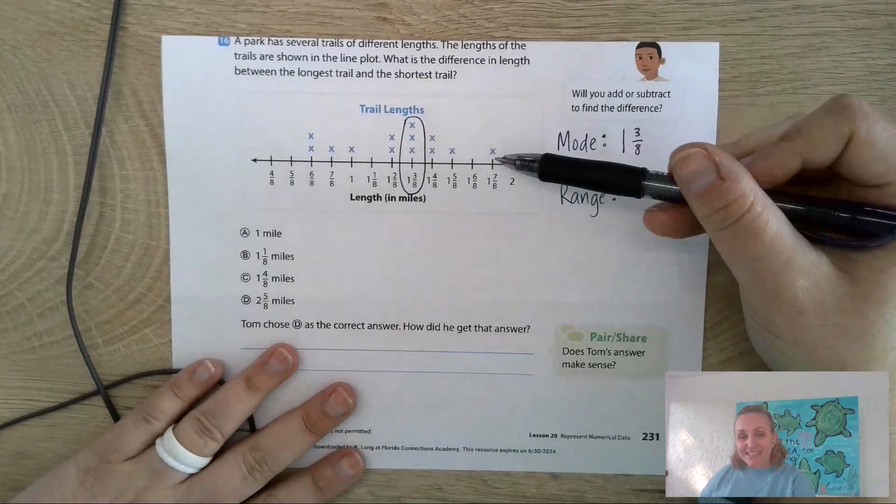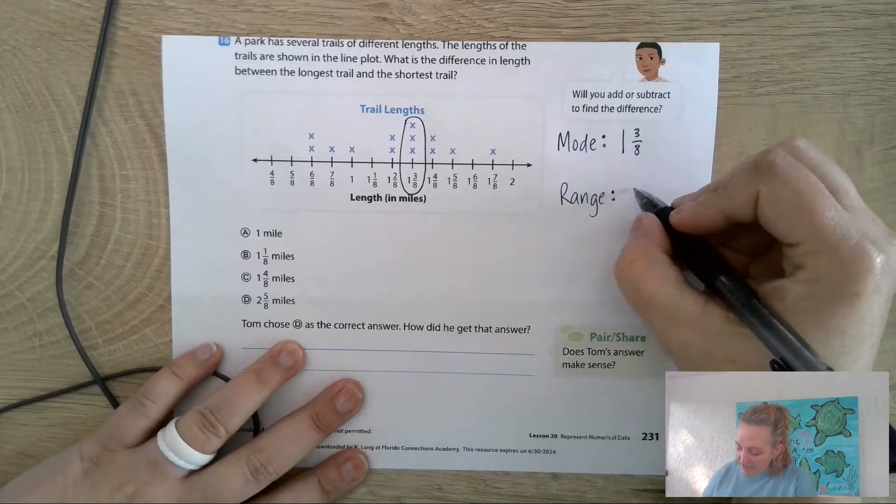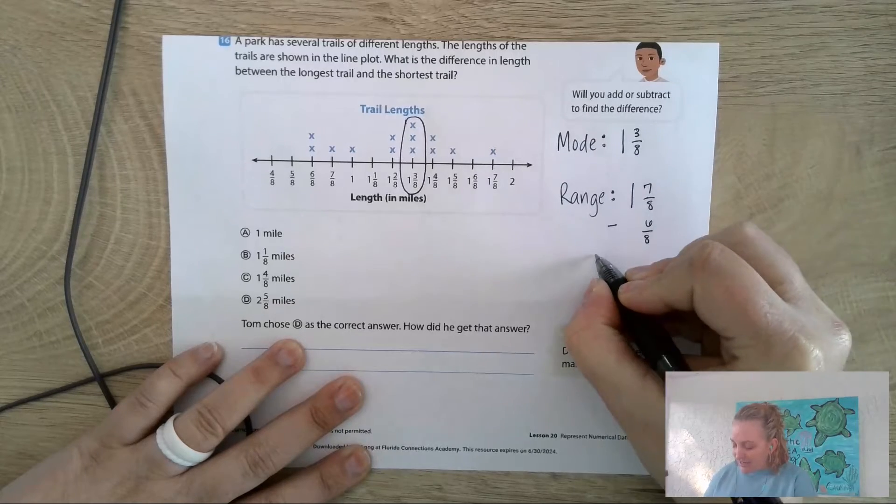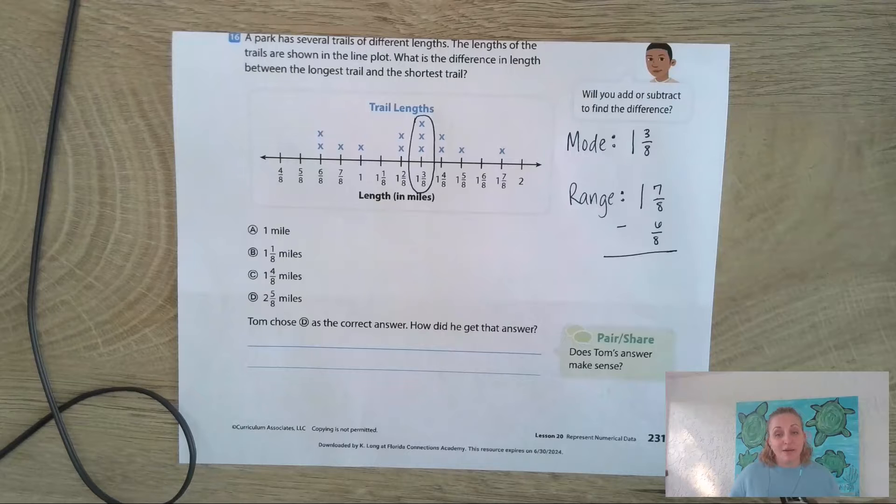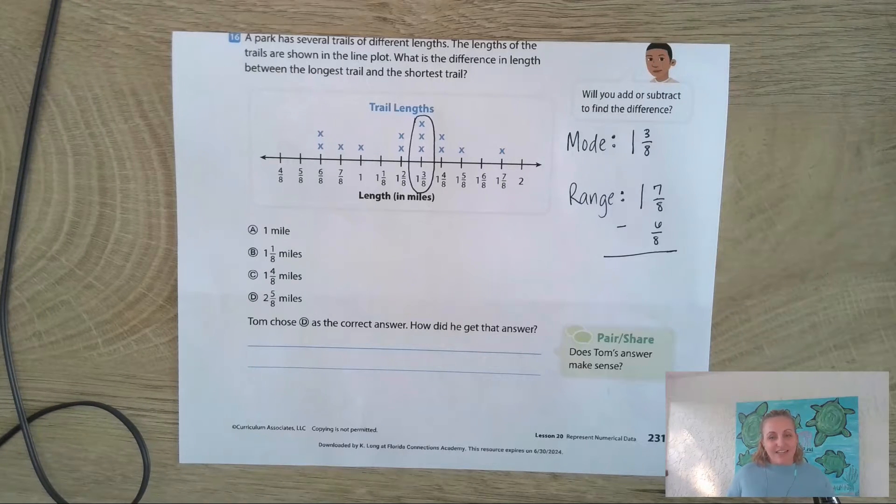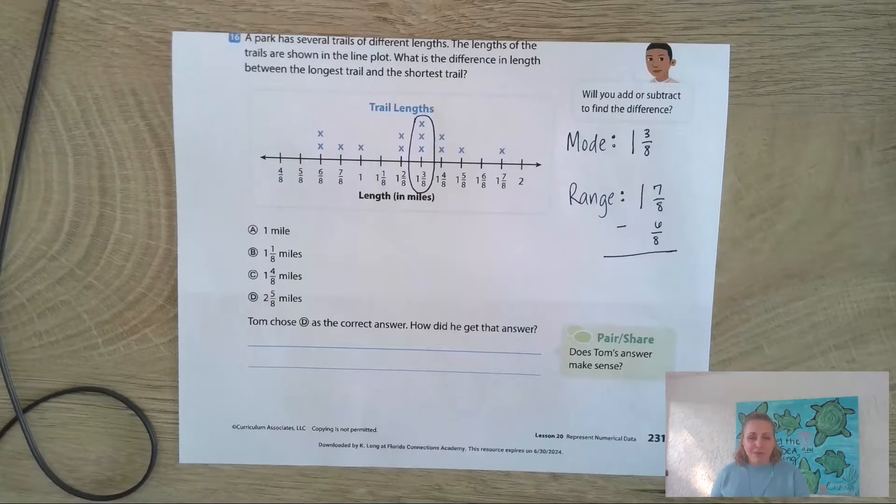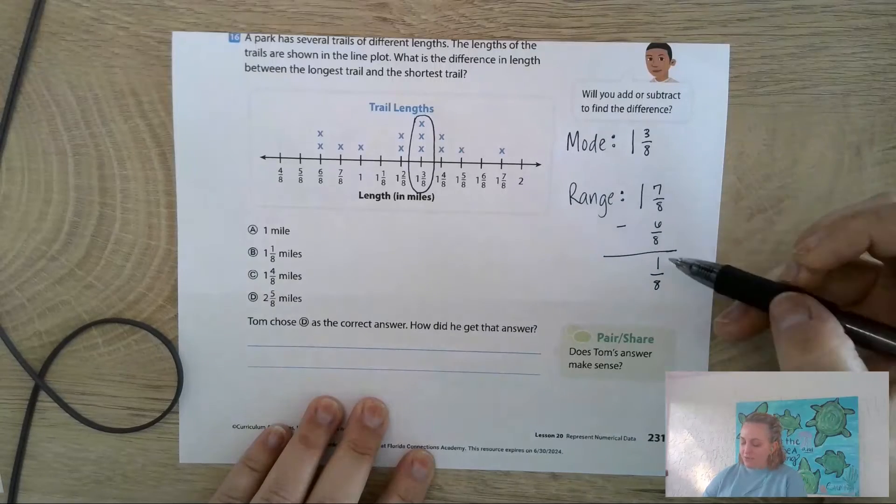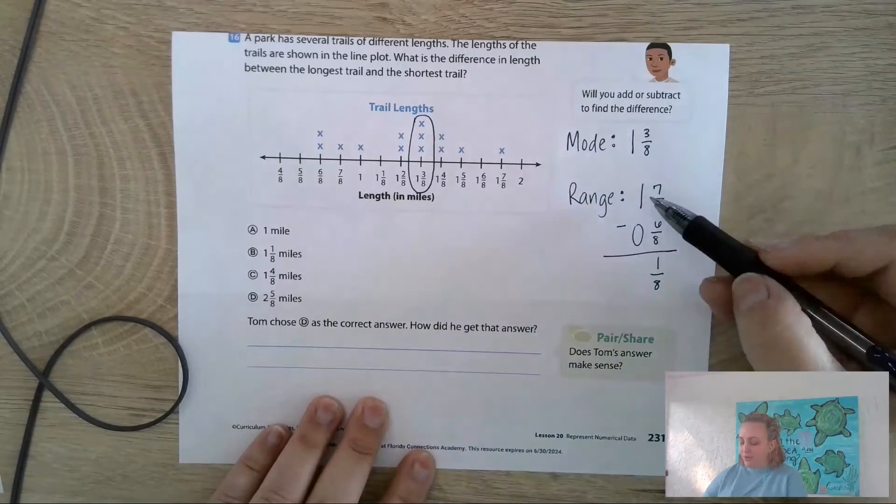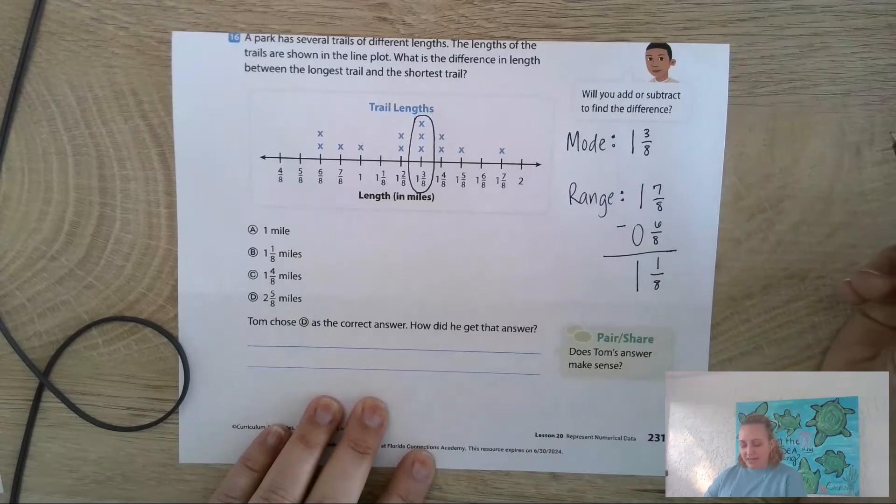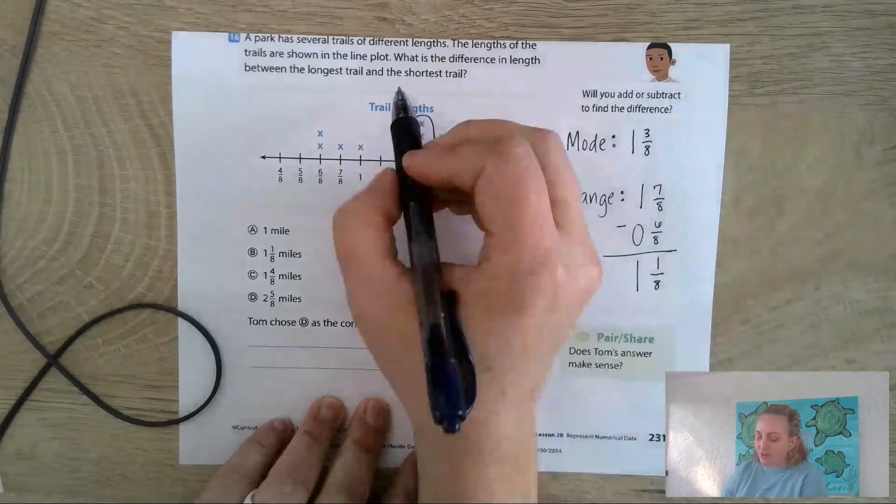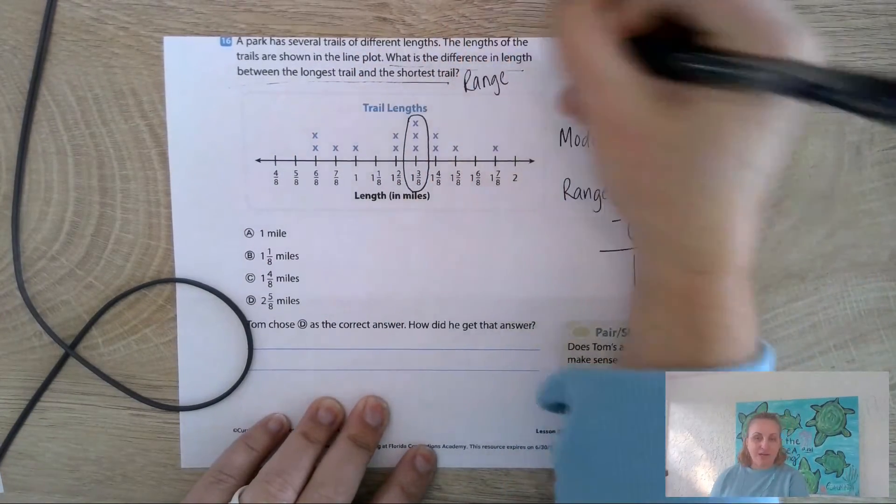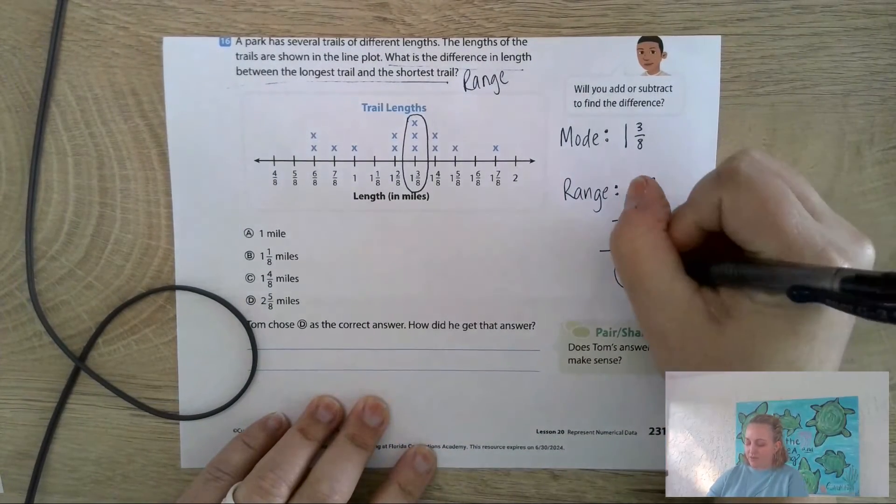Now we're going to find the range. Think about the range - the range is the difference between the biggest data point and the smallest data point. Go ahead and pause your video and find the range. The biggest or longest trail length is 1 and 7/8, and the shortest trail length is 6/8. 7/8 minus 6/8: 7 minus 6 is 1, denominator stays the same, 1 minus 0 is 1, so the range is 1 and 1/8.